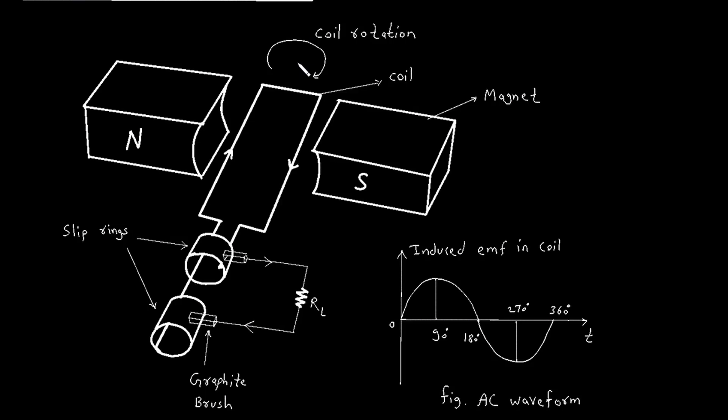Now when this coil rotates, it will cut the magnetic flux. Here we can see there are two slip rings. These are the slip rings and these are the brushes. It is called a graphite brush.